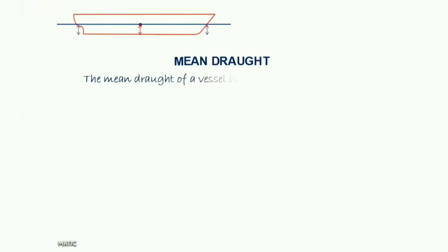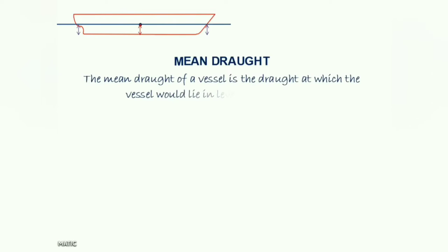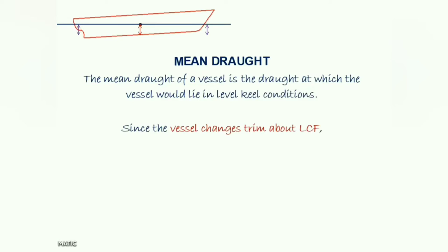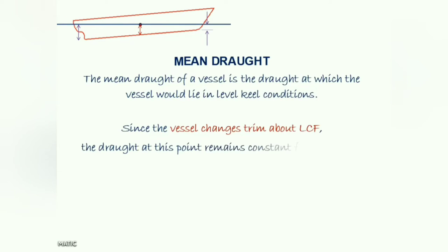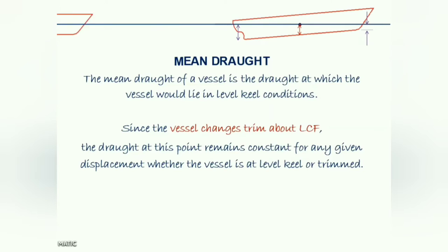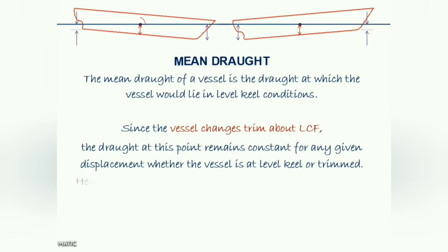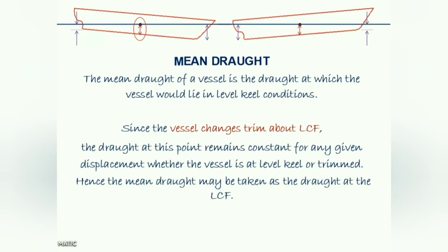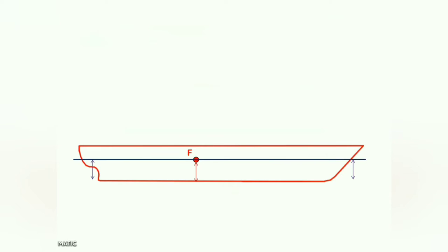The mean draft of a ship is the draft at which the ship will lie in level keel conditions. Since the ship changes its trim about the center of floatation, the draft at this point remains constant for any given displacement, whether the ship is at level keel or trimmed. Hence, the mean draft may be taken as the draft at the longitudinal center of floatation. As the ship changes its trim about the center of floatation, you may observe the change in draft forward and aft, but there is no change in the draft at the center of floatation.